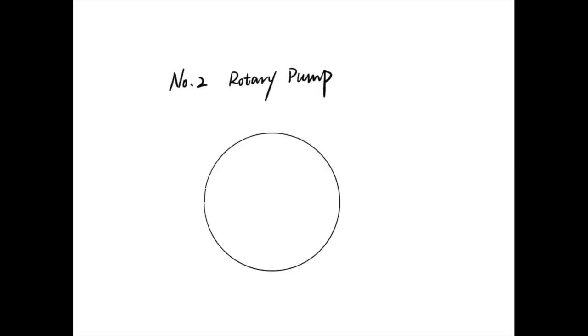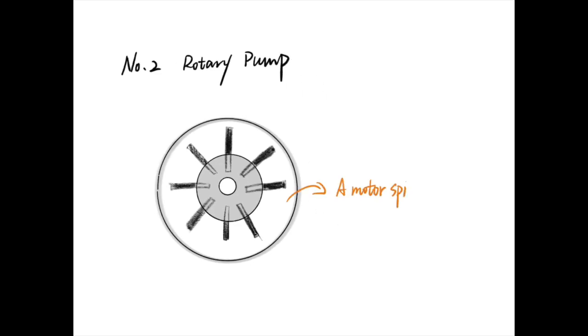The rotary pump, on the other hand, is mechanical. A motor spins a disc inside a large round chamber. The disc is segmented into sections by vanes. When the disc spins, the vanes will push against the wall of the chamber, creating a smaller section and thus pressure to push water through.